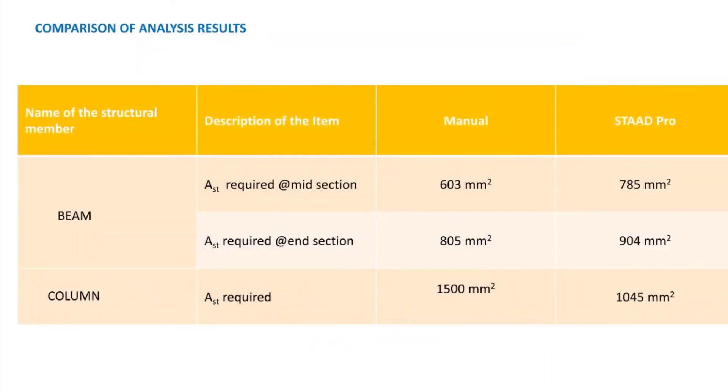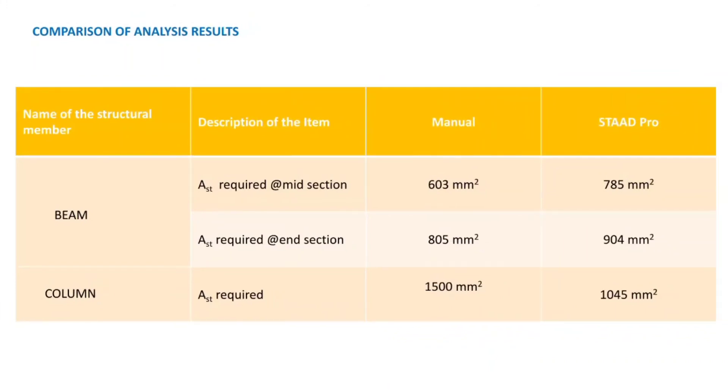Next, we are coming to the comparison of analysis results. We observe that Ast required at mid-section is 603 mm square manually but in STAAD Pro we get the higher value 785 mm square. Ast required at end section 804 mm square, in STAAD Pro 904 mm square. But in column manually Ast required is 1500 mm square but in STAAD Pro 1045 mm square.